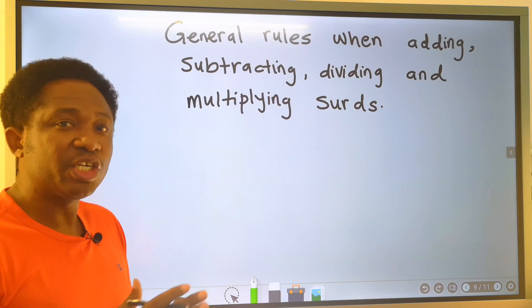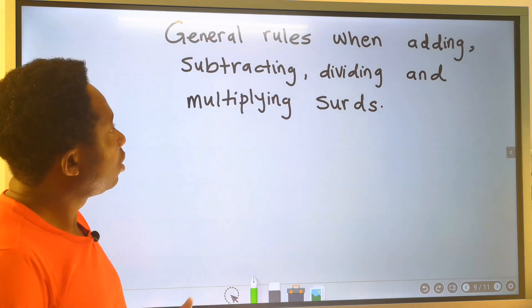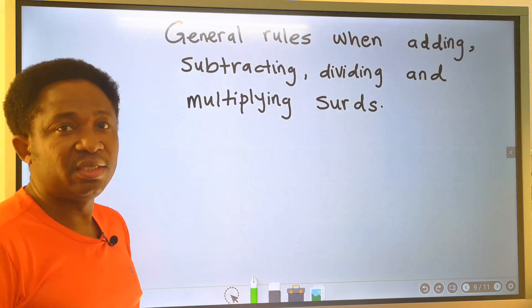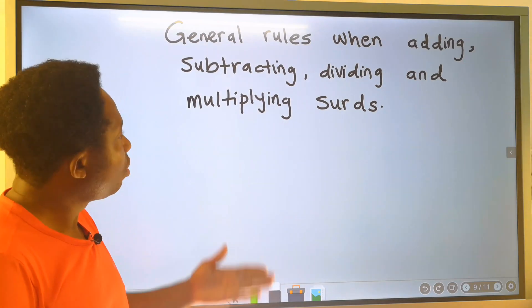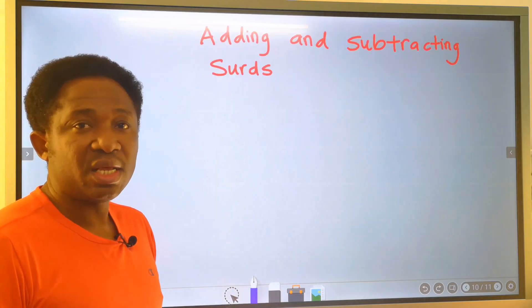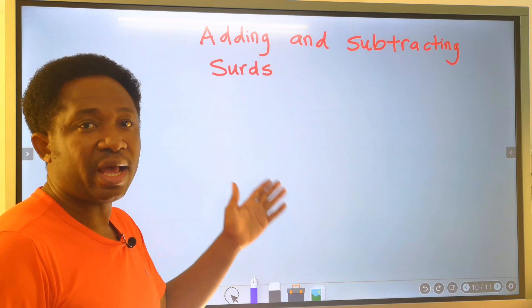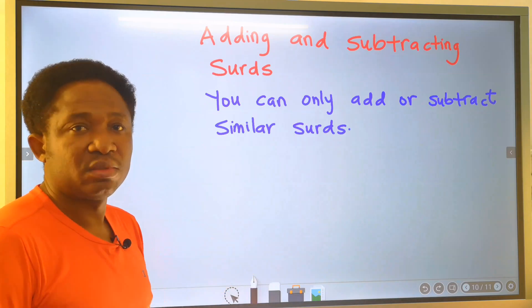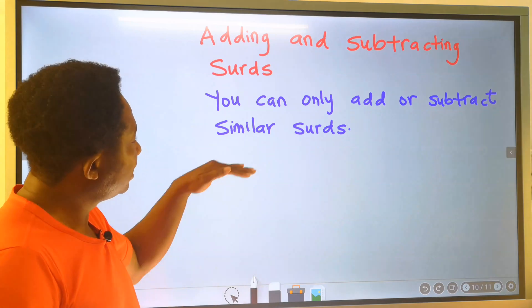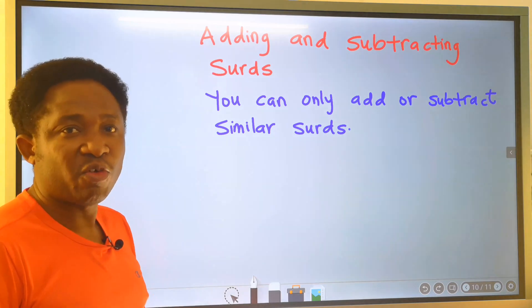Let's consider general rules when adding, subtracting, dividing, or multiplying swords. Let's start with adding and subtracting swords. You can only add or subtract similar swords.